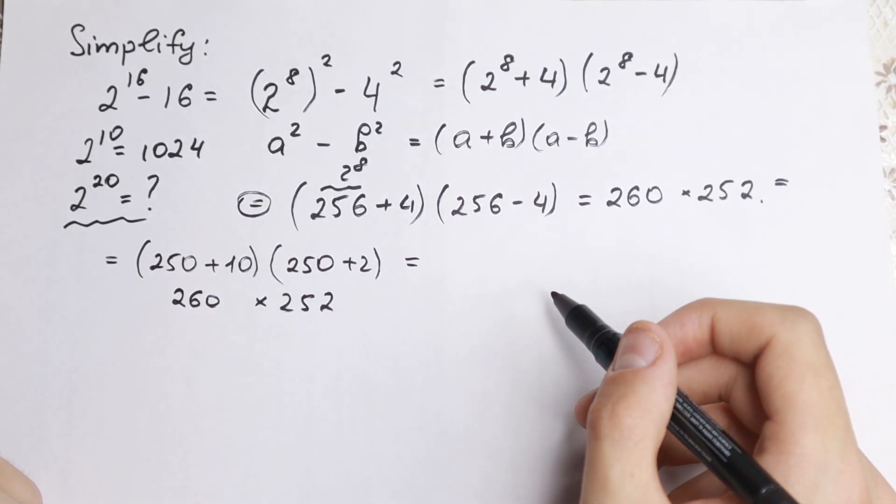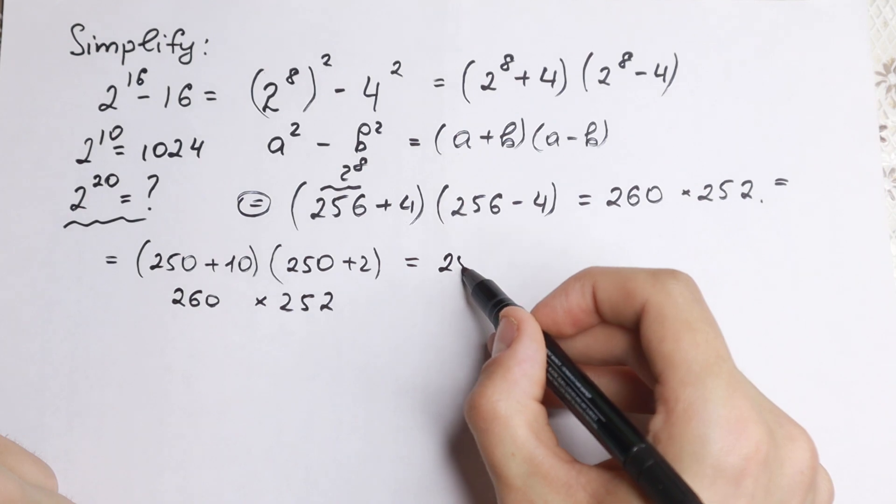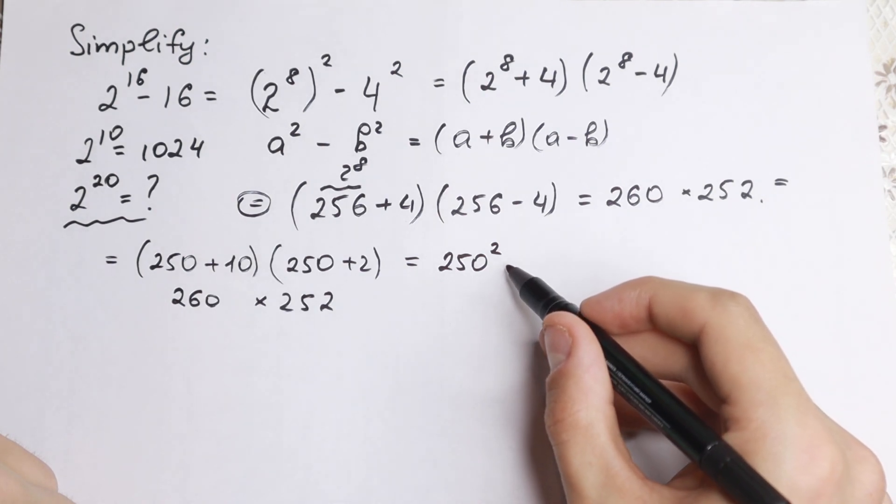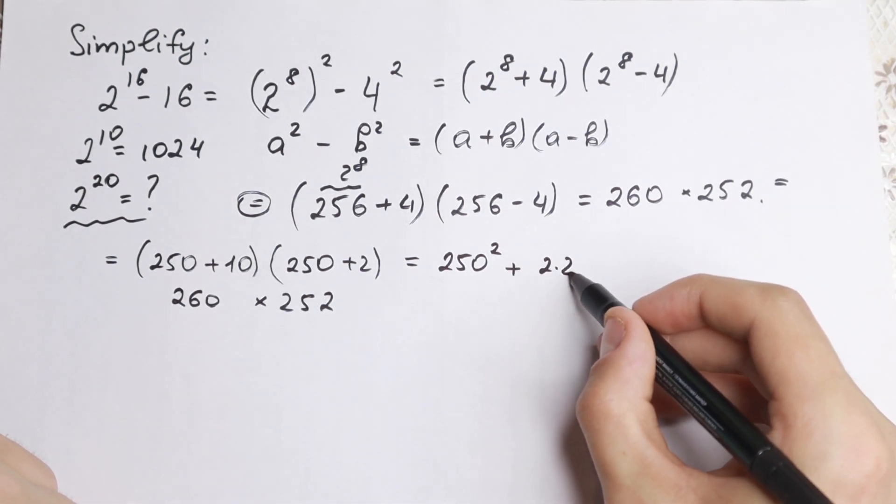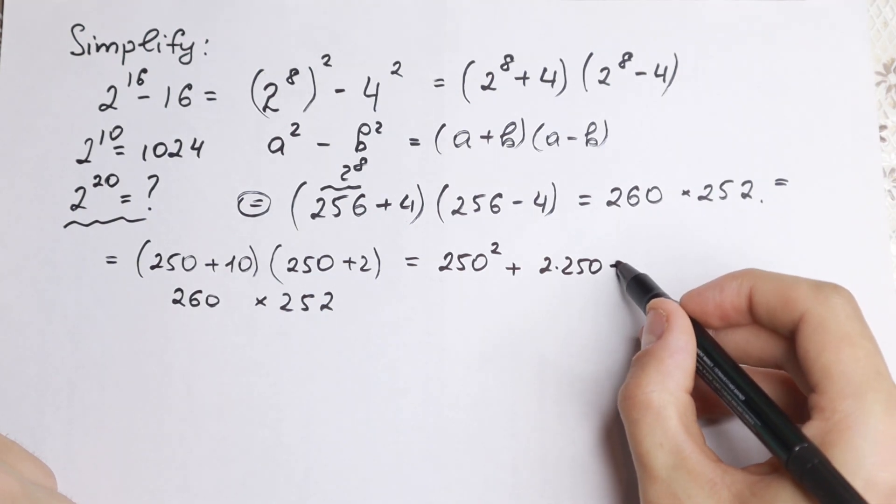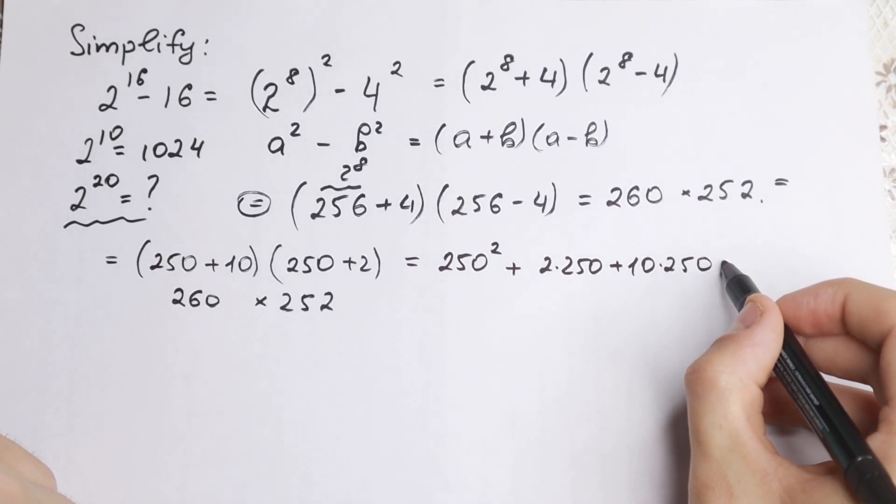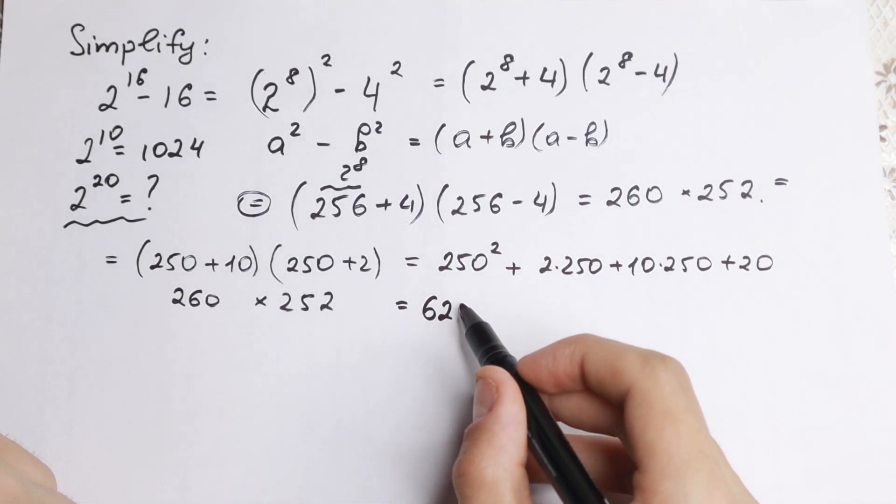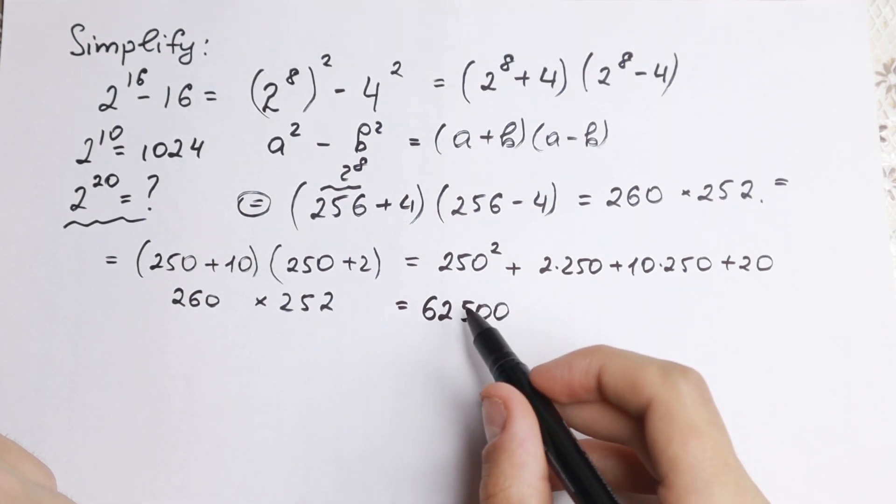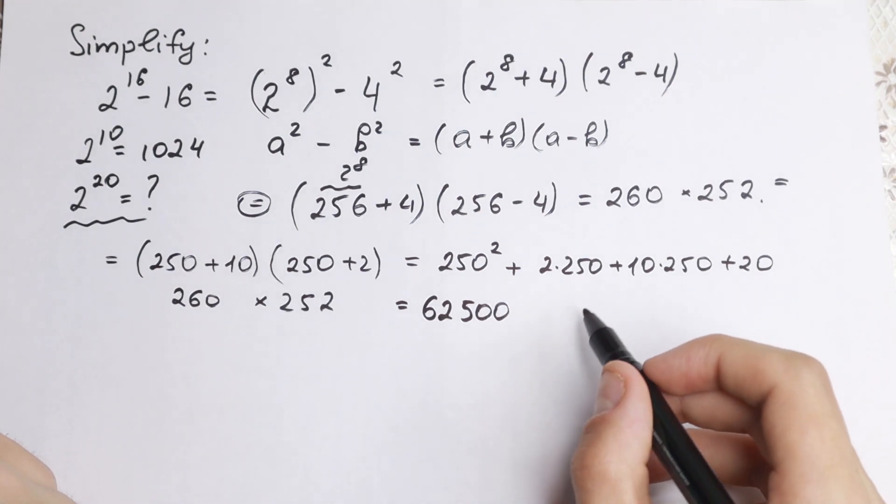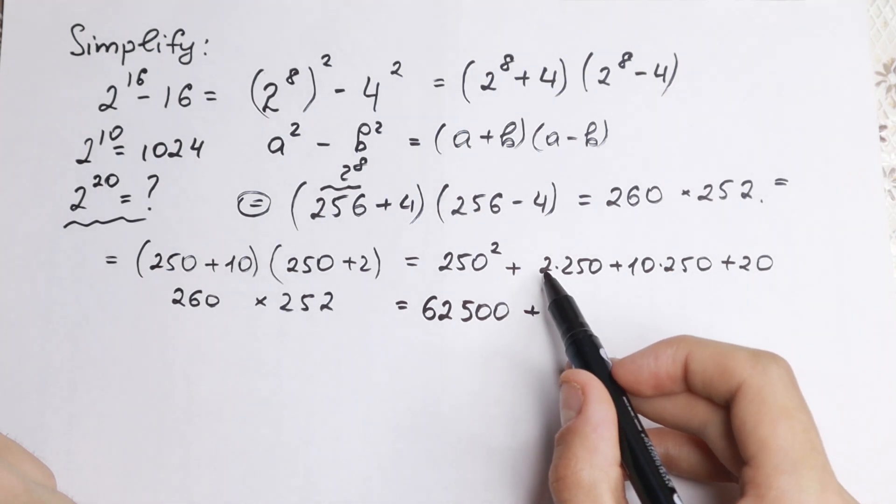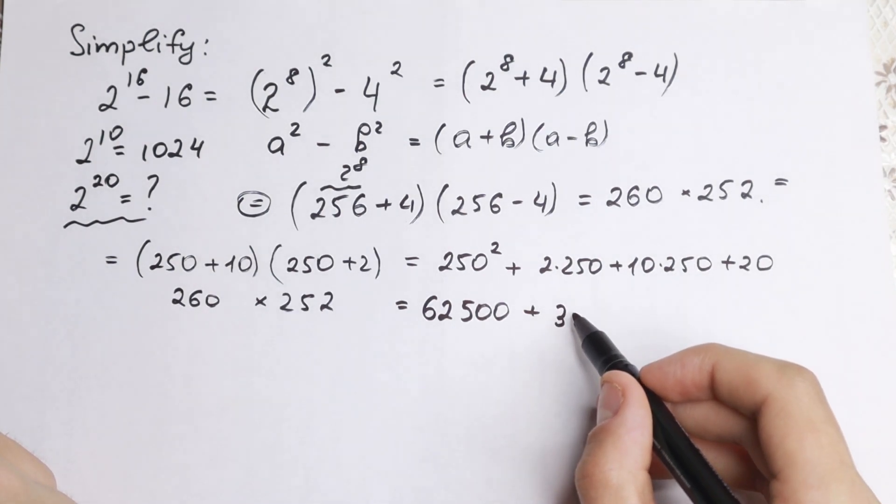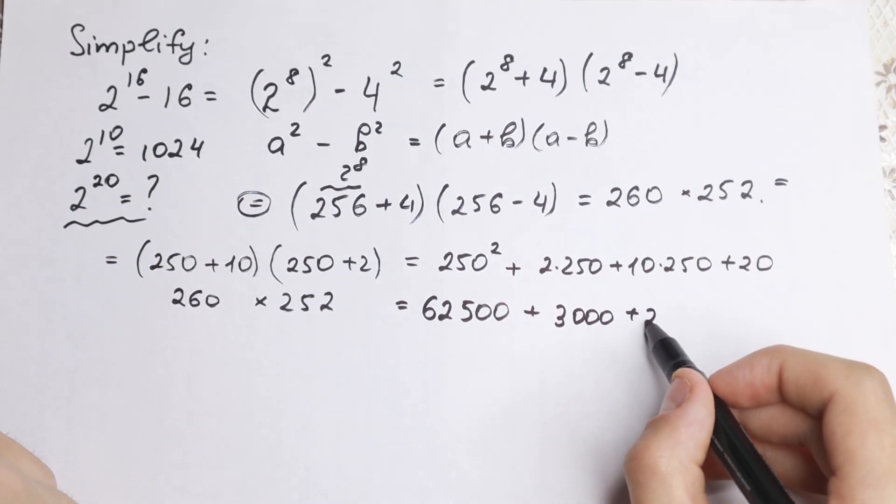And right now let's multiply parentheses by parentheses. What we have? We have 250 squared. Right here we have plus 2 times 250 plus 10 times 250 and plus 20. Let's find exactly the values of these elements. We have 62,500 if we squared it. Right here we have plus 500 plus 2,500, so we have 3,000 and plus 20.